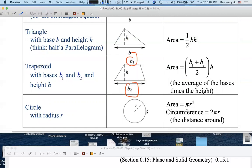Circles. The area of a circle is pi r squared. The circumference of the circle, the distance around, is 2 pi r.